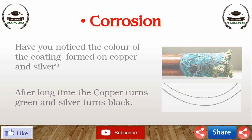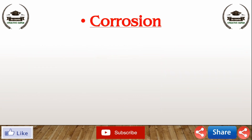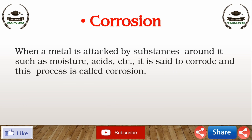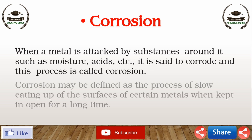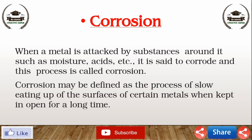From these observations, we can say that when a metal is attacked by substances around it such as moisture, acid, water, air, etc., it is said to corrode and this process is called corrosion. Corrosion may be defined as the process of slow eating up of the surfaces of certain metals when kept in the open for a long time.